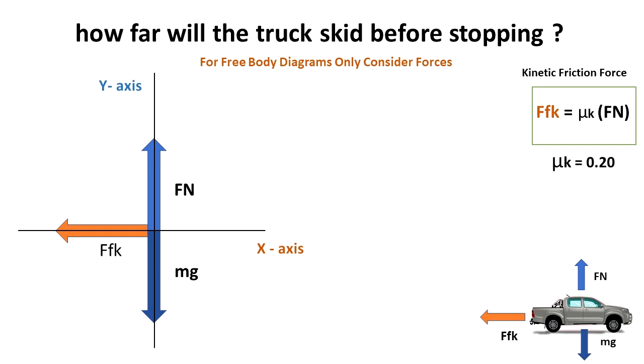So now we go from the picture to the actual diagram. Remember that the kinetic friction force is defined as mu k, that's the kinetic friction constant, times FN, that's the normal force. For this case, mu k is equal to 0.2.